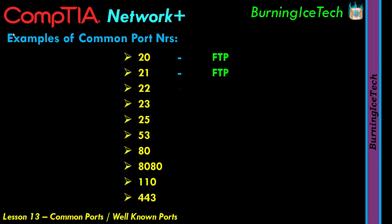Port 22 is SSH — secure shell. Port 23 is Telnet. Both are used for remotely connecting to a device, normally via a command console of some kind. Telnet transmits in clear text while SSH is generally encrypted. Telnet is actually falling away these days because of how insecure it is.